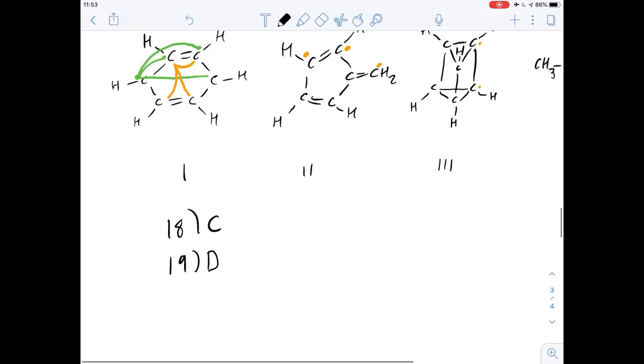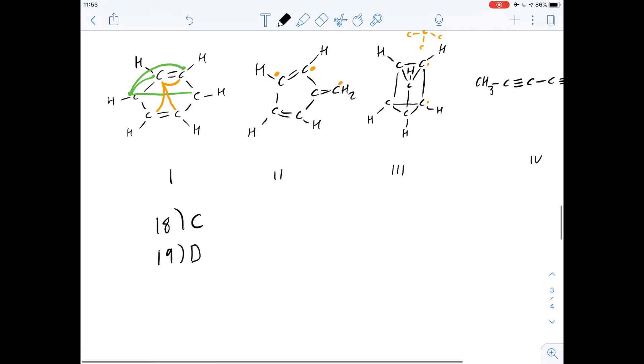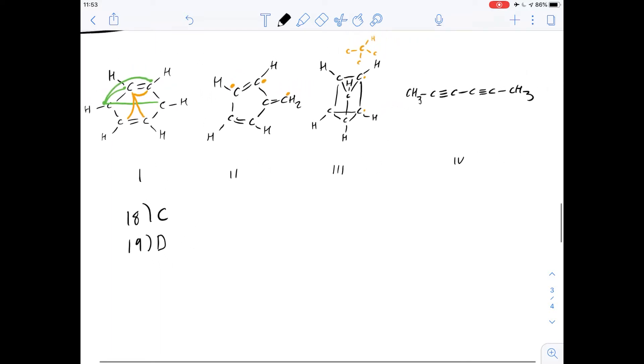Number 20 says if it was found that just one monosubstituted isomer and just two di-substituted isomers could be prepared from benzene, this would be consistent with benzene having which structure? We know from the previous answers that just one monosubstituted isomer can narrow it down to one, three, or four, and just two di-substituted isomers means we can rule out number one. So the answer is either three or four or both.